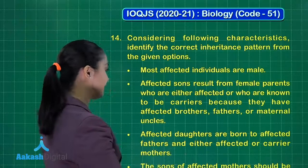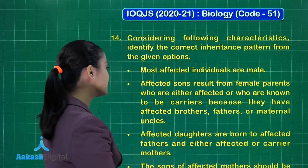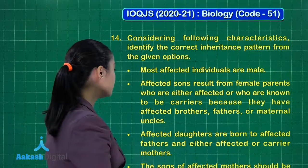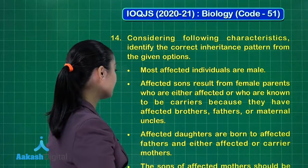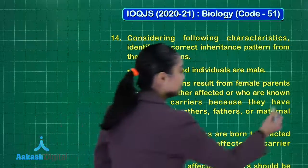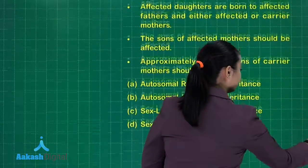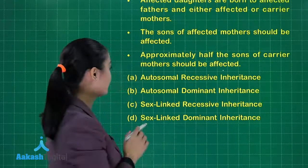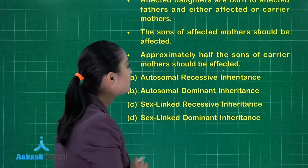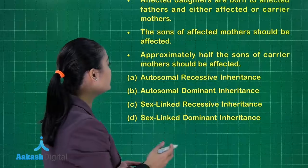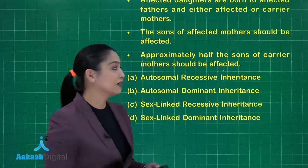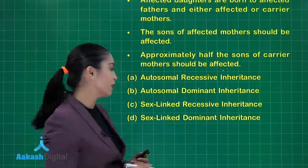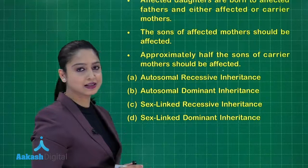The next question: considering the following characteristics, identify the correct inheritance pattern. Most affected individuals are male. Affected sons result from female parents who are either affected or known carriers — having affected brothers, fathers, or maternal uncles. Affected daughters are born to affected fathers and either affected or carrier mothers. Approximately half the sons of carrier mothers should be affected.